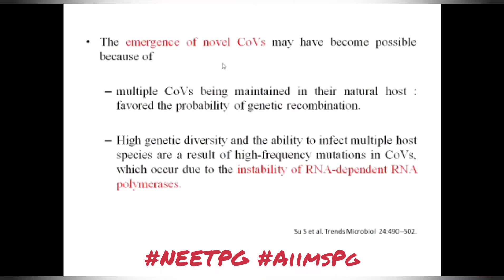The emergence of novel coronavirus may have become possible because multiple coronaviruses are maintained in their natural host, favouring the probability of genetic recombination. A second reason is the high genetic diversity and ability to infect multiple host species as a result of high-frequency mutation in coronaviruses — resulting in high genetic diversity and the ability to infect multiple hosts.